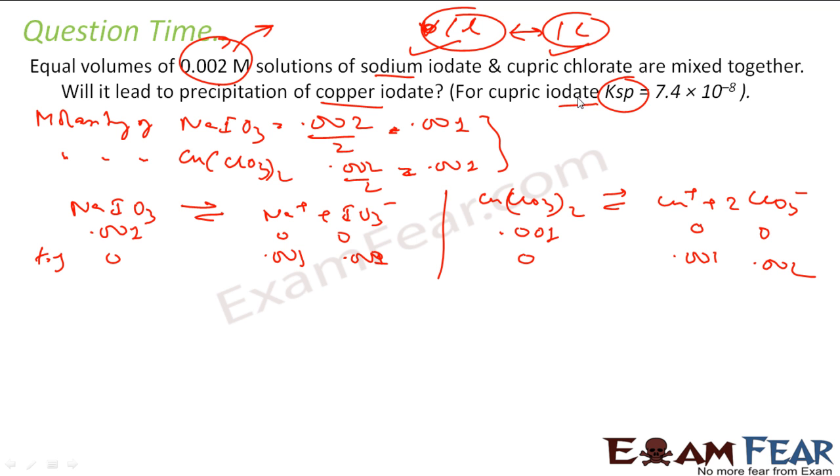It is given that Ksp of cupric iodide. Let's have this equation: cupric iodide gives Cu2+ plus 2IO3-. In this case, the concentration of Cu2+ we have now is 0.001 and IO3- is also 0.001. If you want to find the ionic product here, this is nothing but concentration of Cu2+ into concentration of IO3- squared. That is 0.001 into 0.001 squared. It is only about 10 to the power minus 9.